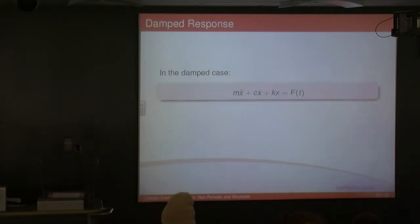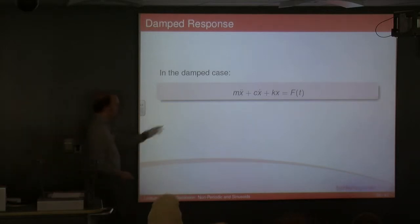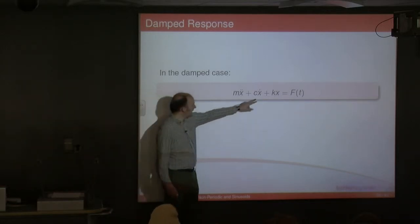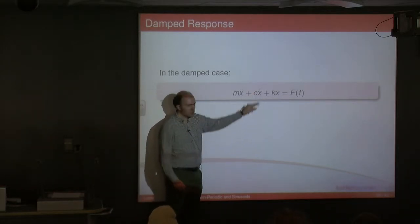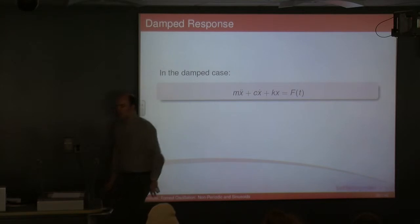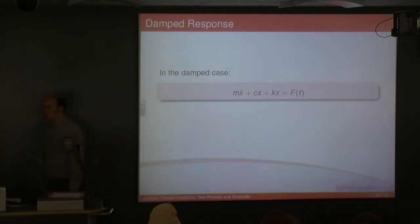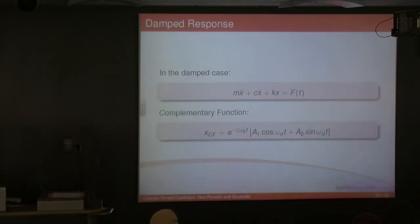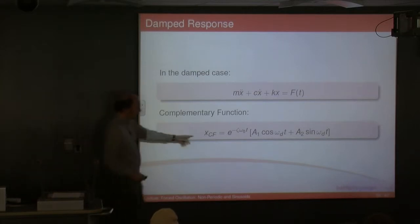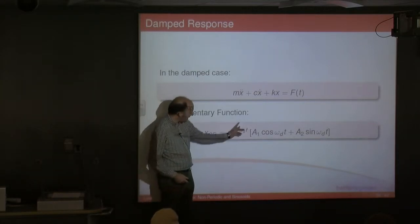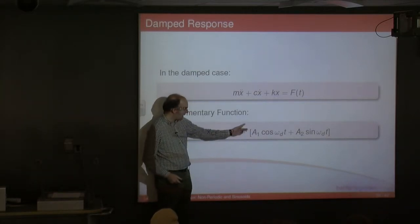What happens when you've got damping? Well basically, here's our equation of motion — the differential equation of motion. Now I've got a cx-dot term, and our complementary function now has this exponentially decaying expansion in here.